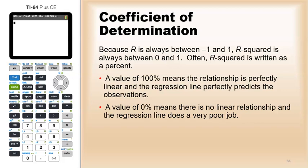A value of 0% means there is no linear relationship and the regression line is not a good fit. It will do a very poor job. That means whatever x value you pick, your prediction for the y value is pointless.